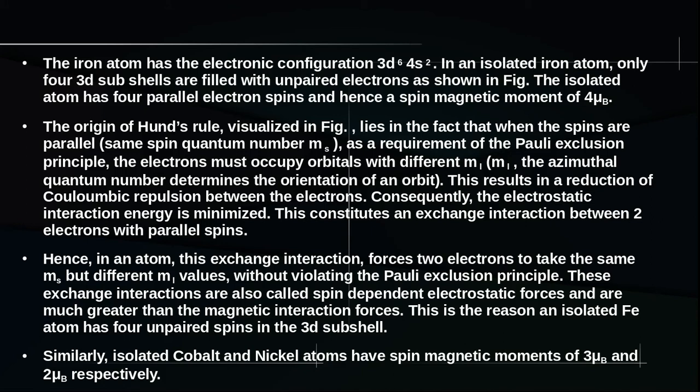Hence, in an atom, this exchange interaction forces two electrons to take the same MS value but different ML values without violating the Pauli exclusion principle. These exchange interactions are also called spin-dependent electrostatic forces and are much greater than the magnetic interaction forces. This is the reason an isolated iron atom has four unpaired spins in the 3D sub-shells.